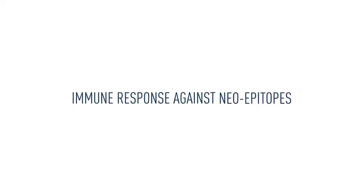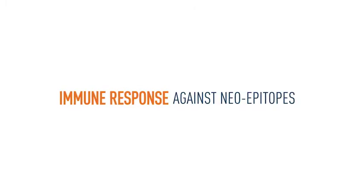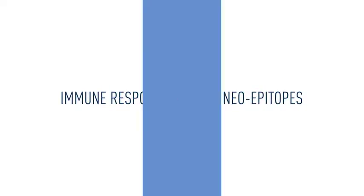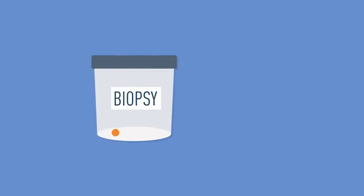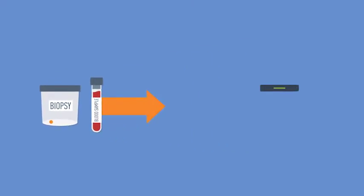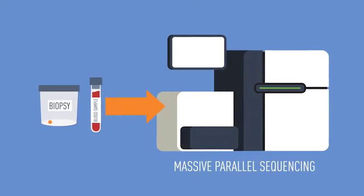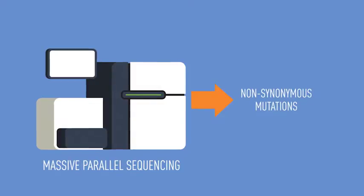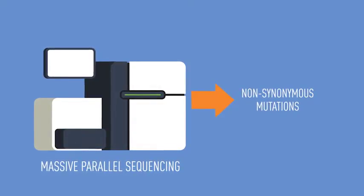This approach is being developed to evoke an immune response against unique mutations or neoepitopes within a patient's tumor. It begins with a biopsy of the patient's tumor and a blood sample to collect normal cells. DNA from the tumor and blood are sequenced, then compared to identify unique or non-synonymous mutations that can be found only in the patient's tumor.